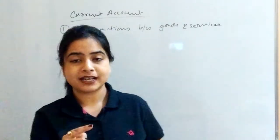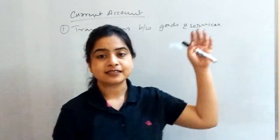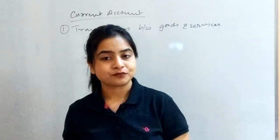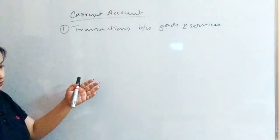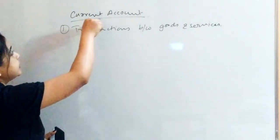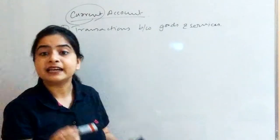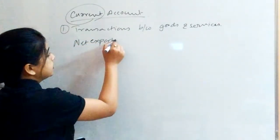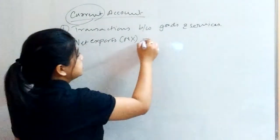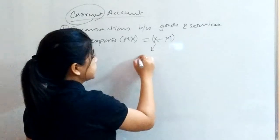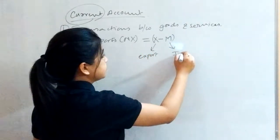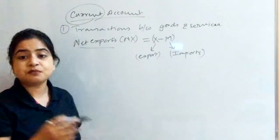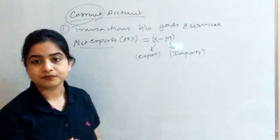Since we mentioned 'abroad,' this means that under the current account there is involvement of exports and imports. The current account is mainly determined by how net exports change. Net exports, written as NX, equals exports minus imports — where X stands for exports and M stands for imports. So net exports is the main determinant for the current account.